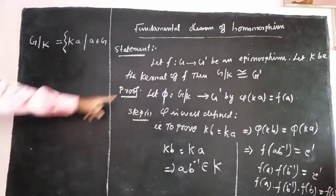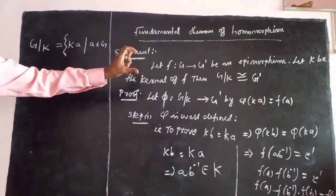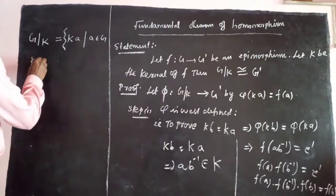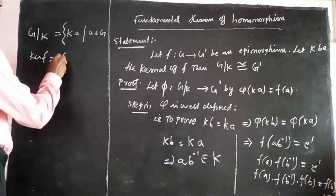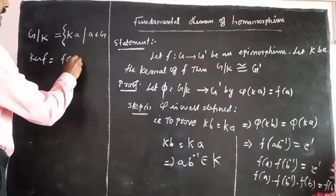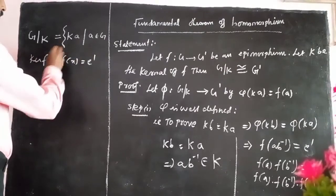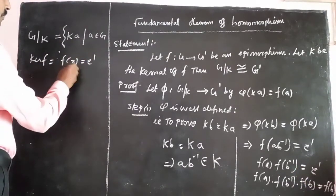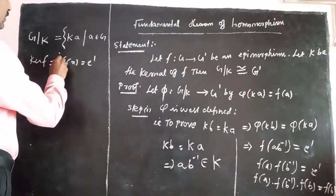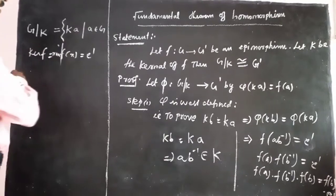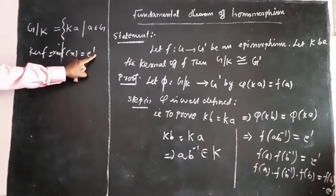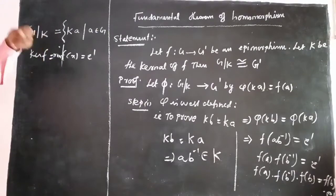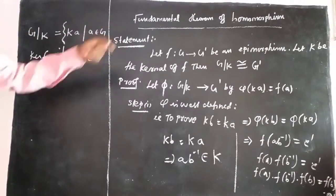Kernel of F — kernel of F means: the kernel of F is equal to the set of x belonging to G such that F of x is equal to e', where e' is the identity element in G'.